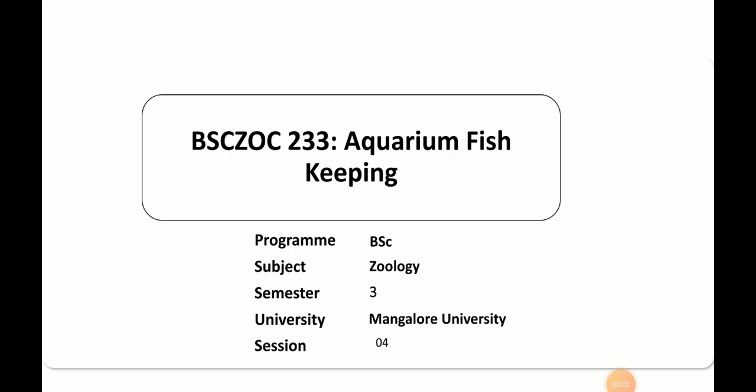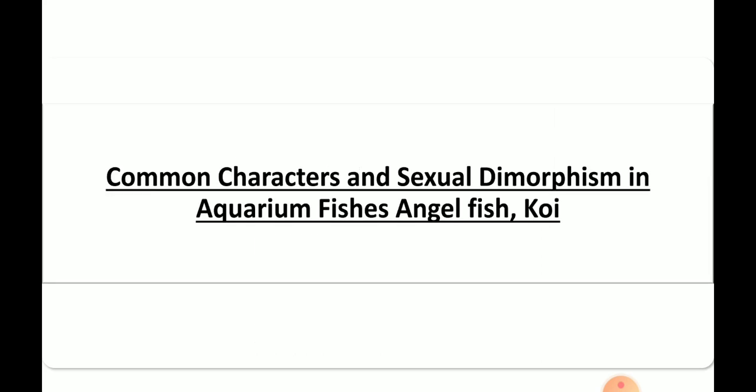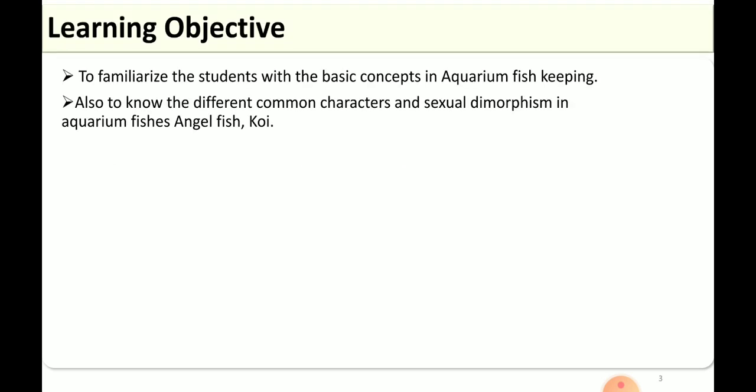Hello everyone. In this session we are going to discuss the elective paper for second year BSc students, that is aquarium fish keeping. This is session 4, and here we are mainly going to discuss the common characteristics and sexual dimorphism of aquarium fishes — that is angelfish and koi. These are the objectives of this session: you will come to know about the basic concepts of fish keeping, as well as the common characteristics and sexual dimorphism of these two fishes.